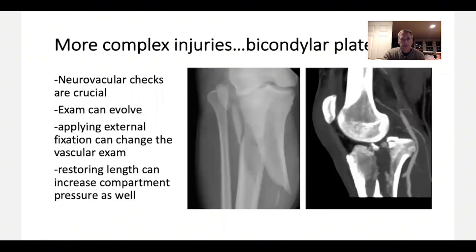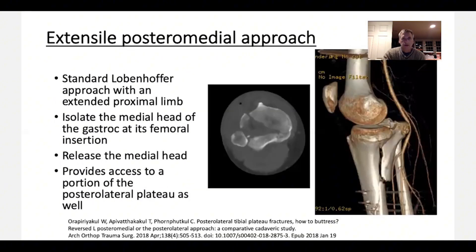As injuries get more complex — bicondylar tibial plateaus — an external fixator can certainly be an important part of these to help with reduction. Be aware that pulling them out to length on an external fixator can increase compartment pressure. You can do a true prone approach going posteriorly across from the medial side to the lateral side, holding the fragment reduced with a posterior plate, knowing you will also have to go anterolateral. Stay right on the bone to protect the neurovascular structures.